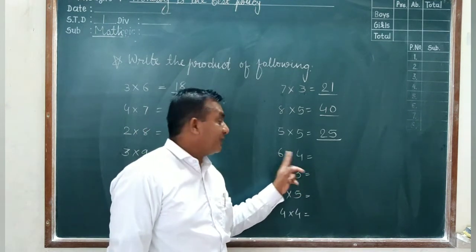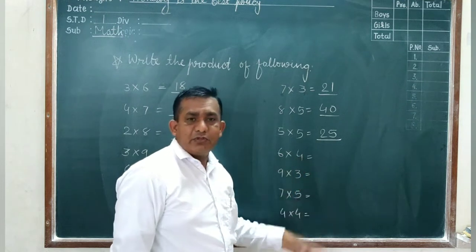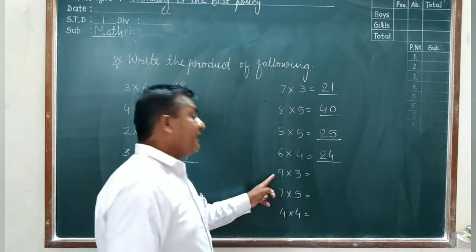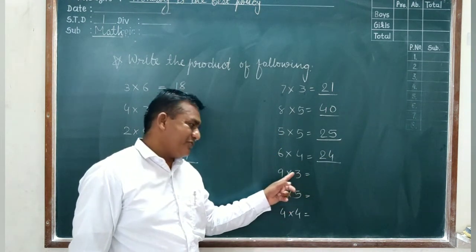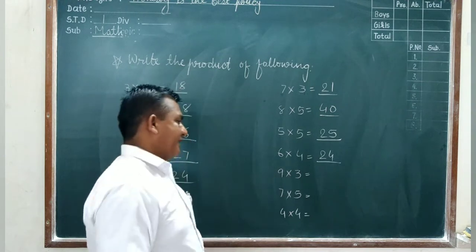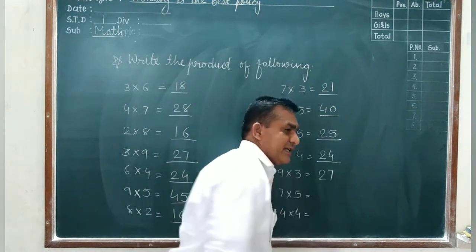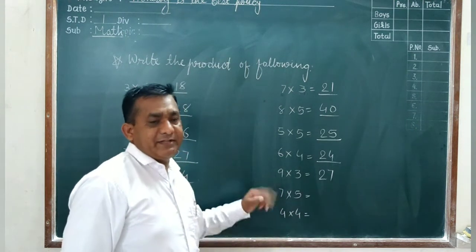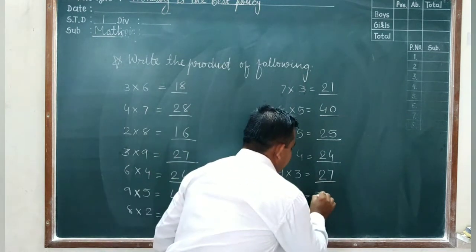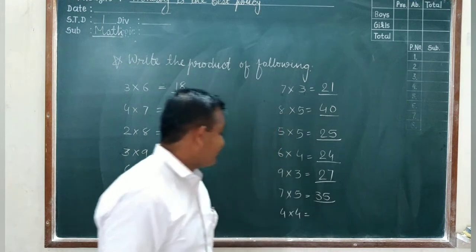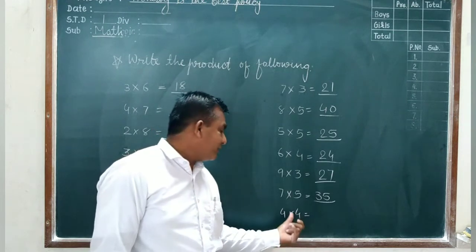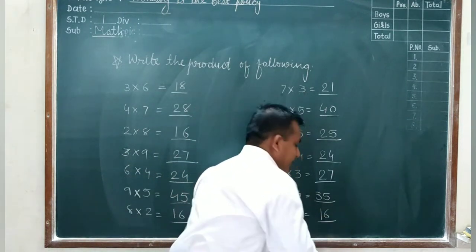Now six fours are. I do not learn table 6 but I also learn table 4. So we speak four sixes are 24. Write here. Nine threes are. You do not learn table 9. So what we do? We speak table 3: three nines are 27. Five sevens are. So you speak five sevens are 35. So 35 here. And four fours are. Again repeat that: four fours are 16. Means write here 16.